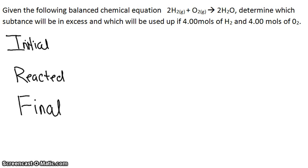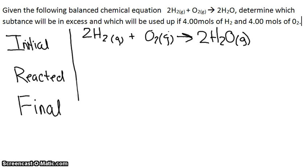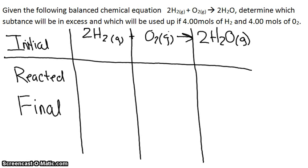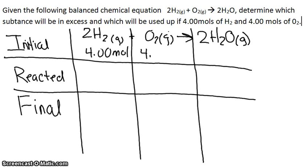So we write out our balanced equation at the top. So you go 2H2 gas plus O2 gas goes to 2H2O gas. So we make a chart. So it says we are starting off with 4.00 moles of H2 and 4.00 moles of O2.